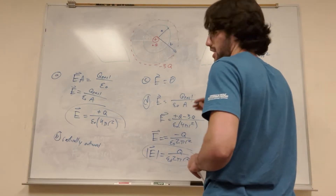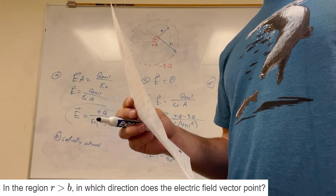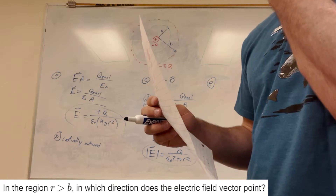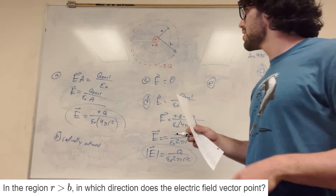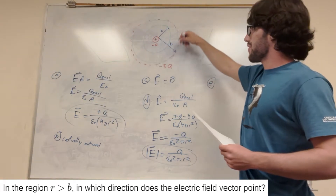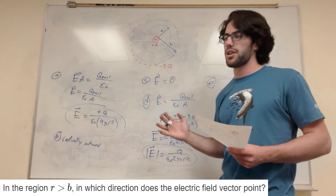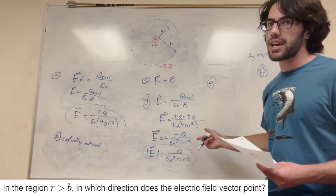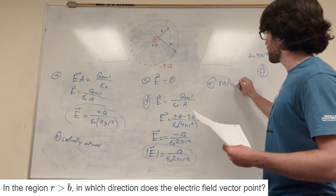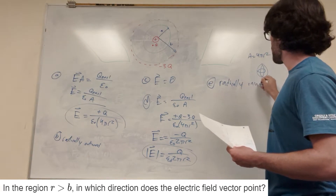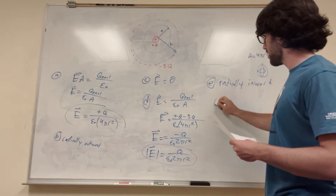Part E asks which direction the electric field vector points in the region r greater than B. Since the net enclosed charge is negative, the field points inward. So the answer is radially inward.